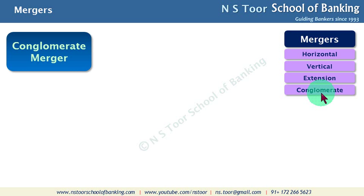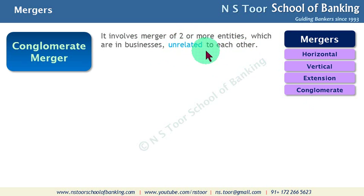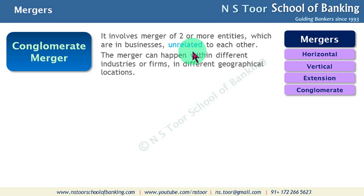What is conglomerate merger? This type of merger involves the merger of two or more entities which are in businesses unrelated to each other. If two companies have no relatedness in their business — their business is unrelated to each other — and when they decide to merge, that type of merger is called conglomerate merger.